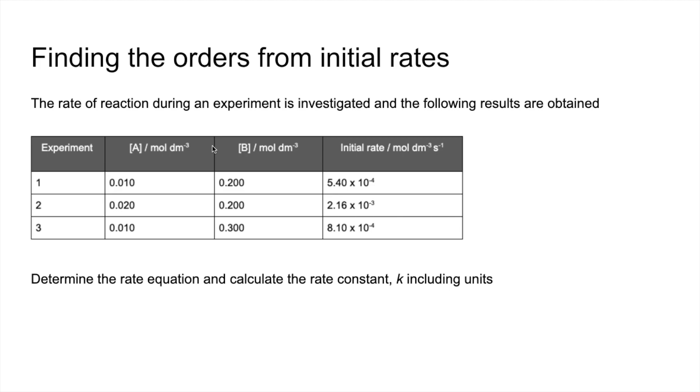Okay, so we'll start by looking at the order with respect to A. So we're looking for a pair of experiments where we can hold B constant, which we can see in 1 and 2 we can. So we'll look at what happened to A, it's doubled, and we're looking at what happened to the rate. It's gone up by a factor of 4.